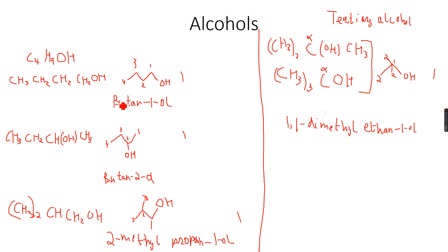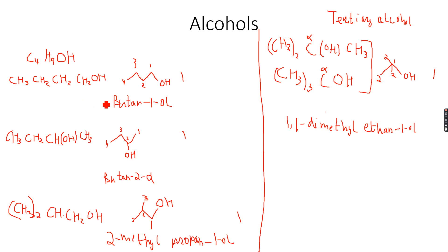These are just four different structural isomers, but we can also have stereo isomers. Let's start with butan-1-ol and see if it has any stereo isomers. I don't see any carbon-carbon double bond, so there will be no geometric isomers, and I don't see any chiral center — there is no carbon atom attached to four different groups — so there will be no optical isomers. Therefore there is no stereo isomer for this isomer.